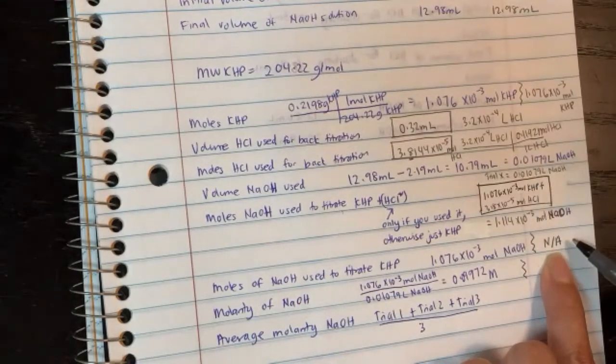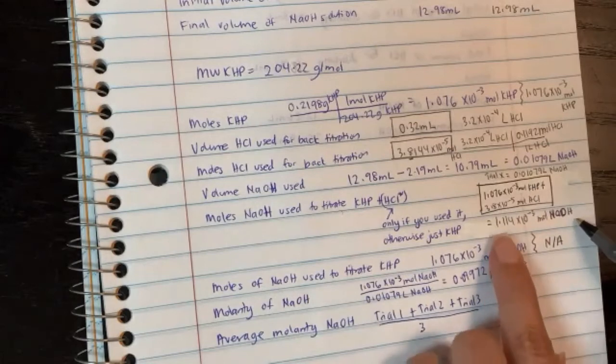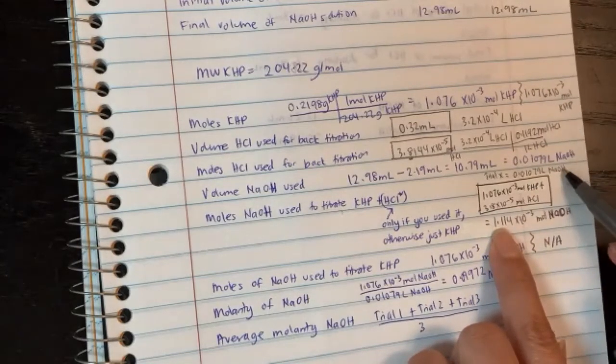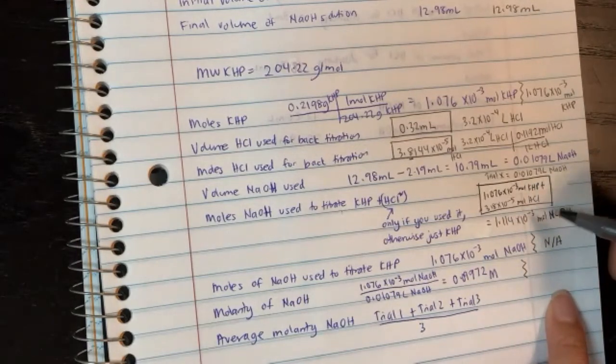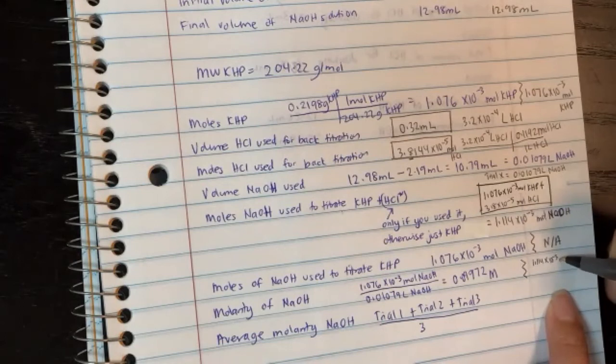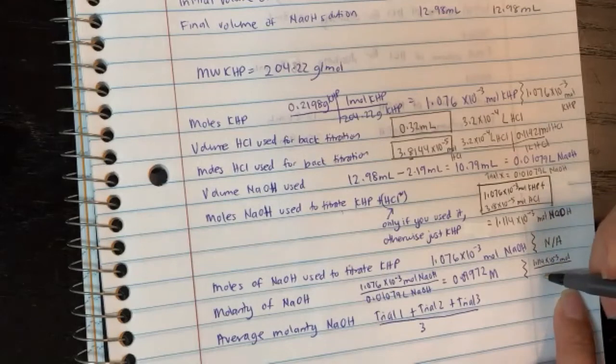Now we skip this line here because that's not applicable to our case now. We're going to use this. So to get our molarity is actually this moles of NaOH divided by that liter of NaOH. So in this case here, because of the back titration, our molarity is going to be slightly different. It's 1.114 times 10 to the minus 3 moles divided by the volume 0.01079 liters.